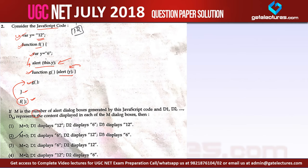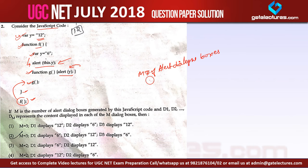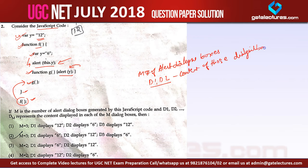Now they are asking: if m is the number of alert dialog boxes generated by this JavaScript code, and d1 and d2 are the content of those dialog boxes, then what is the value of m and what is the content of each of these dialog boxes?